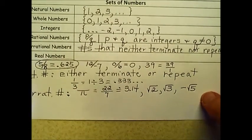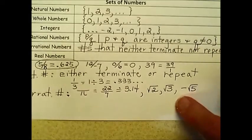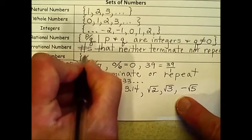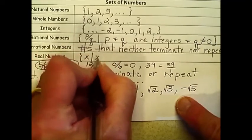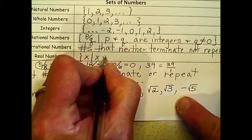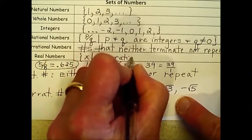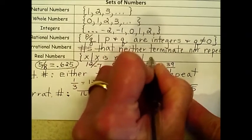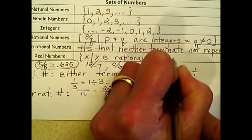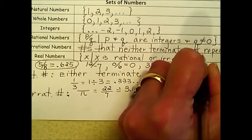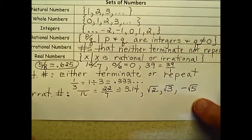Our last set of numbers, then, is the real numbers. And these are all the numbers that we've just talked about. I'm going to use the set builder notation, x such that x is rational or irrational. It contains all of the set of numbers that we've previously defined.